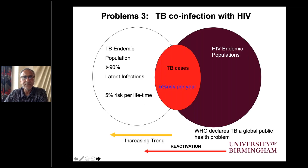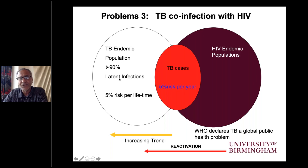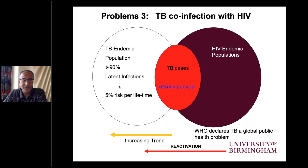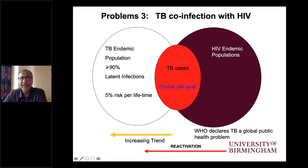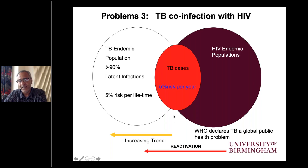The third issue is case rates in a TB endemic population. Individuals can be infected with M. tuberculosis but not show clinical symptoms because their immune system counteracts the infection — what we refer to as latent infection. These individuals have a five percent risk per lifetime of developing tuberculosis. With the HIV endemic population, that cohort carries a five percent risk per year, and we're seeing an increasing trend of reactivation and higher rates of infection.